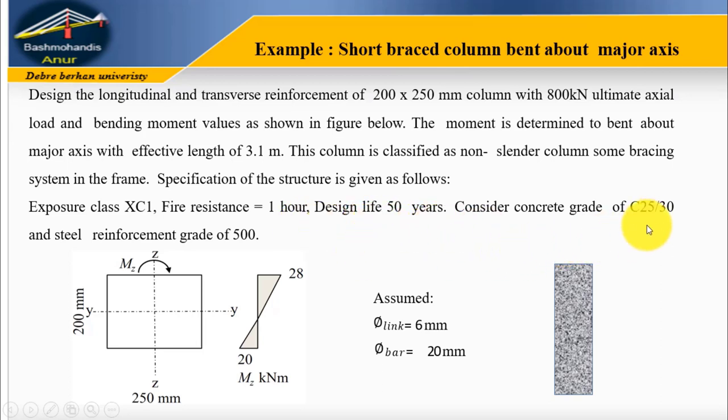Exposure class XC1, fire resistance one hour or 60 minutes, design life 50 years. Consider concrete grade C25/30 and steel reinforcement grade of 500 MPa. This is the dimension of the column, 200 by 250. The moment is given here. We have top moment 28 and bottom moment 20.